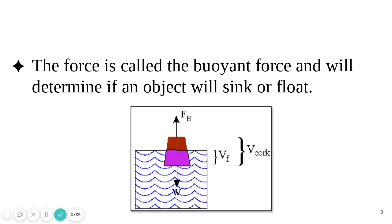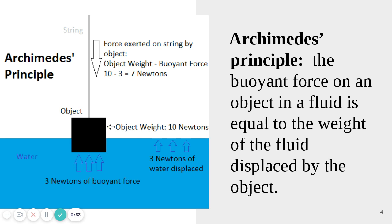We also have to understand what a buoyant force is to completely understand Archimedes' principle. A buoyant force is a force that will determine if an object will sink or if it will float — that upward force. So what does Archimedes' principle actually state? It says the buoyant force on an object in a fluid is equal to the weight of the fluid displaced by the object.